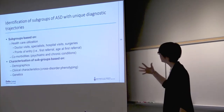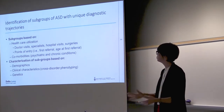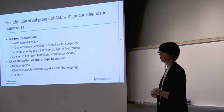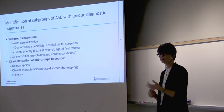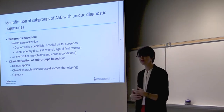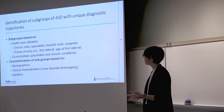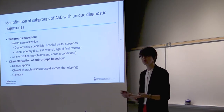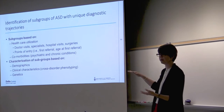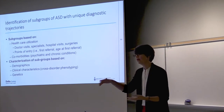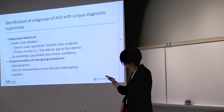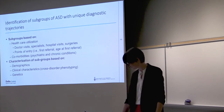What we proposed to do for this project was to try to identify subgroups of autism with unique diagnostic trajectories. We would use health system interaction information — things related to doctors' visits, referrals to specialists, hospitals, surgeries, and the points of entry, such as what was their first referral and the age of that first referral — as well as comorbid conditions, both psychiatric and chronic. We would then characterize those subgroups based on demographics, the cross-disorder phenotyping available from POND, and the genetic data. The reason the genetic data is in the characterization step rather than the subgroup-determining step is directly linked to the challenges around privacy, data access, and consent.